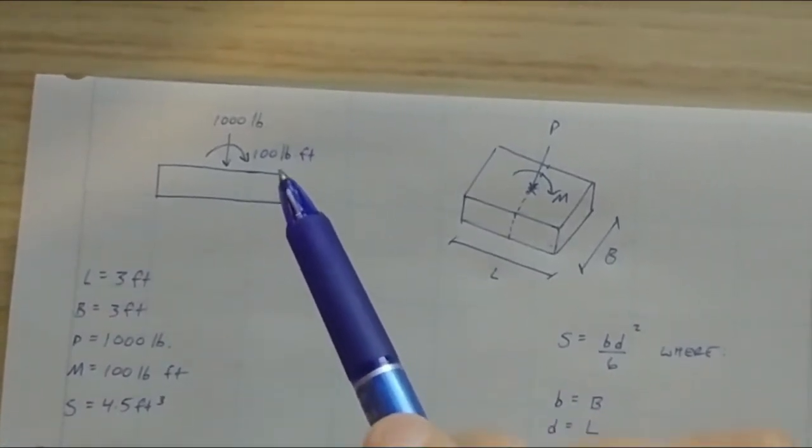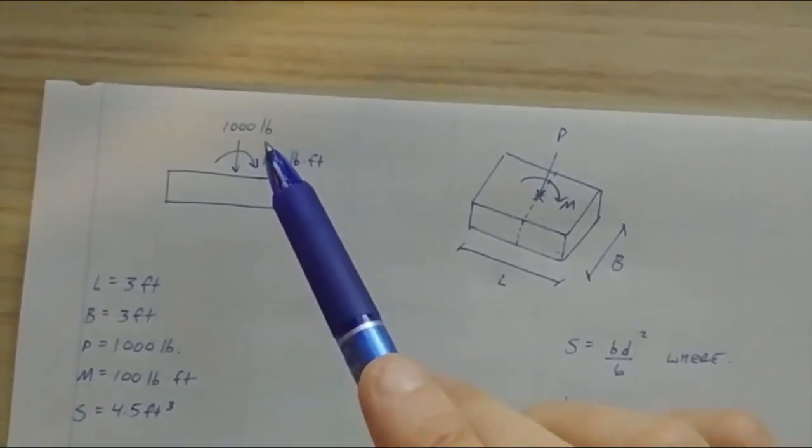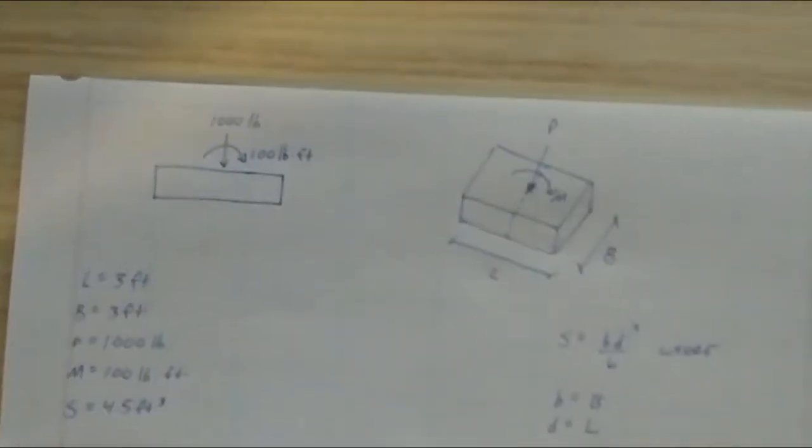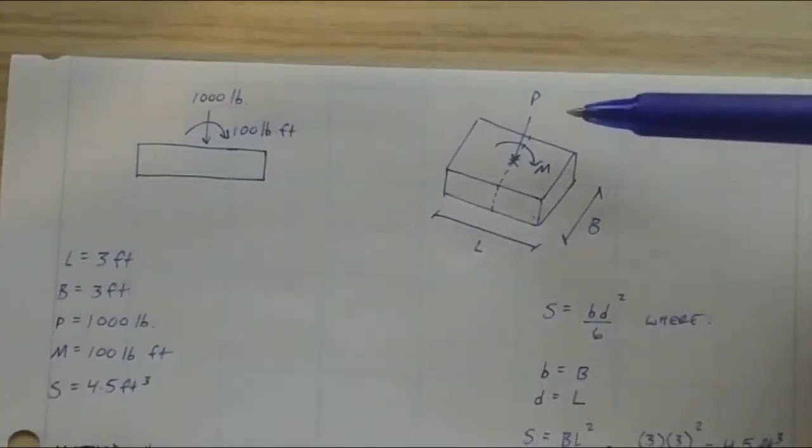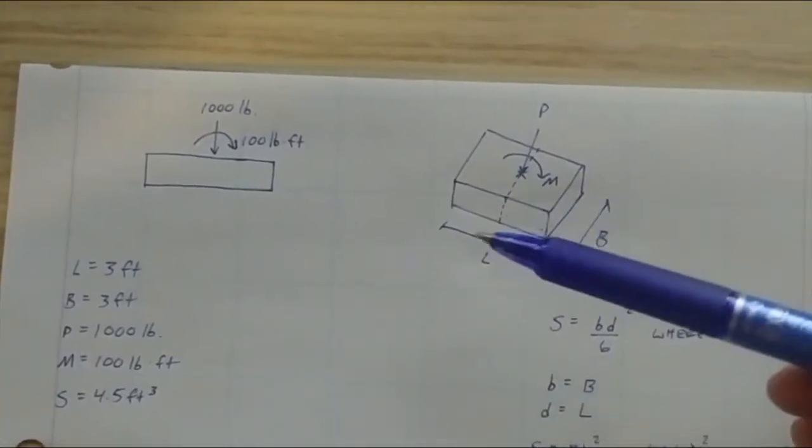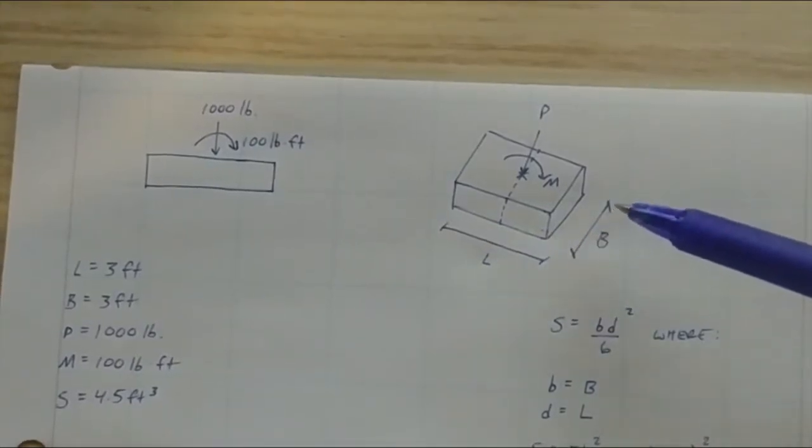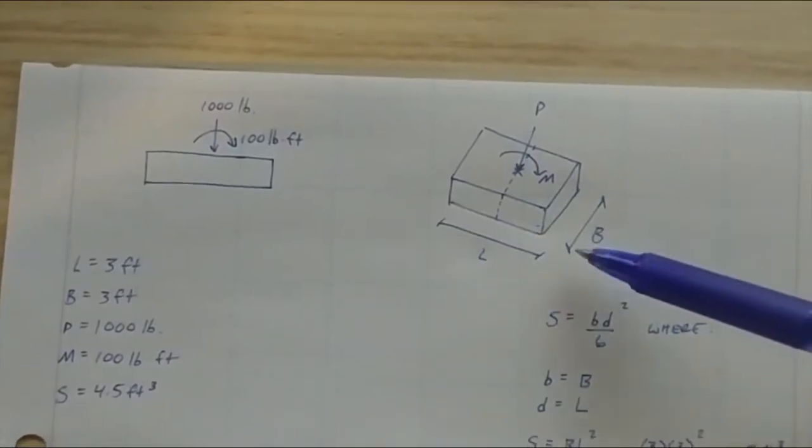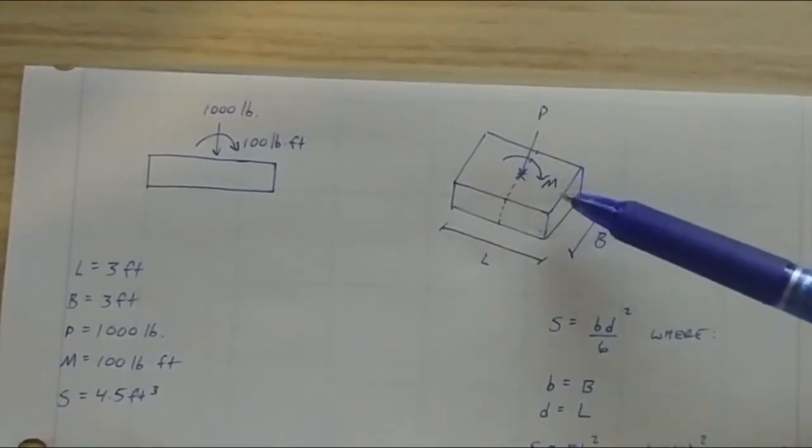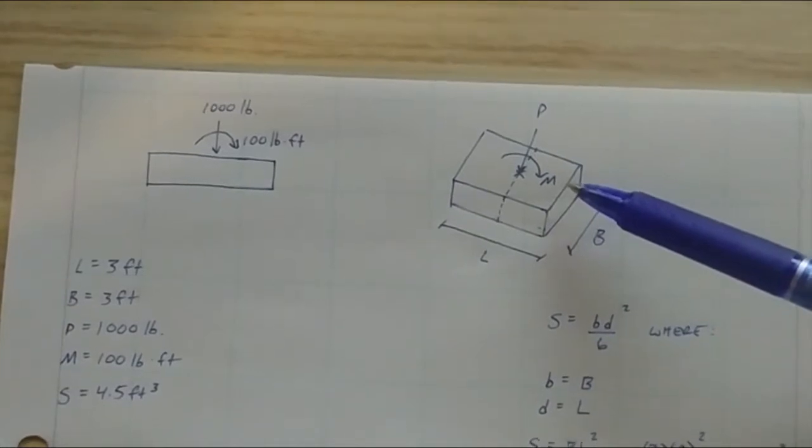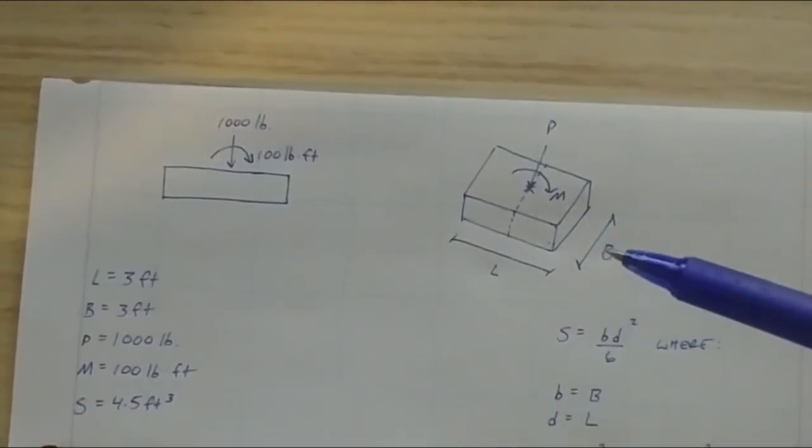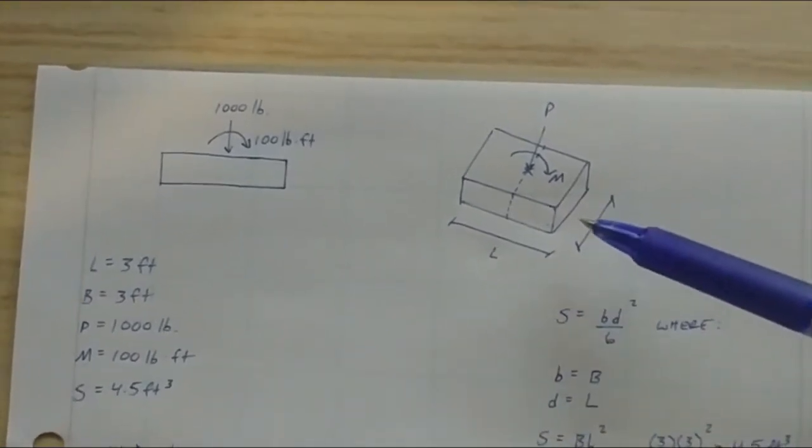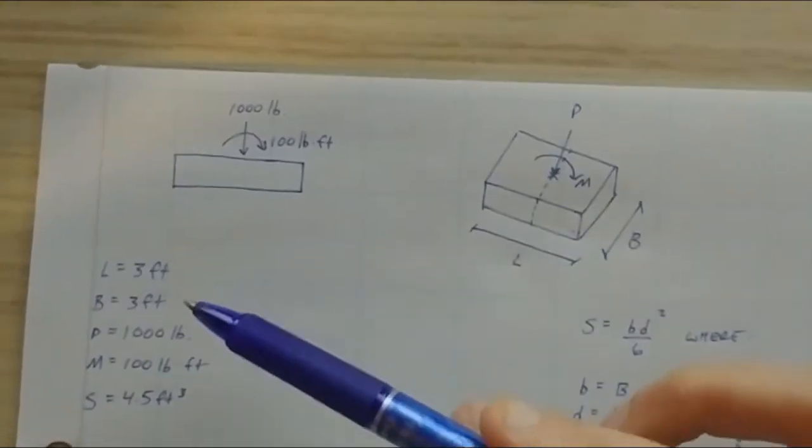And then you have your footing bearing on your soil below. So we have a load of 1000 pounds. And then we also have a moment that's being applied. That could be due to maybe this is a fence post footing. But let's assume that's what's happening. So you have this wind force that might be acting on the fence, which then corresponds to some type of moment, some lateral force corresponding to a moment at the base of your post.